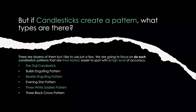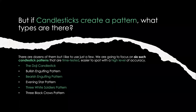If candlesticks create a pattern, what types are there? There are literally dozens of them — there's a whole Japanese candlestick dictionary, a huge book with all kinds of patterns that you can actually trade just using. But today we're going to focus on my six — well, about eight, with a couple of honorary shout-outs to the hammer. These are time-tested, easy to spot, and have a high level of accuracy. They're good for the beginner.